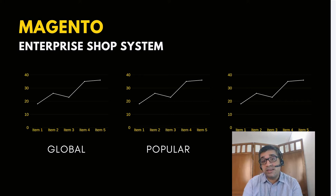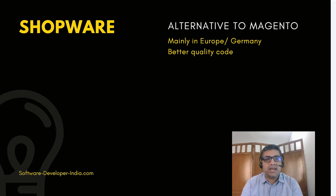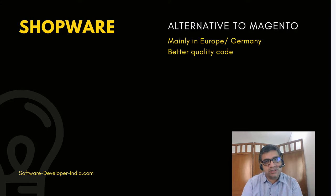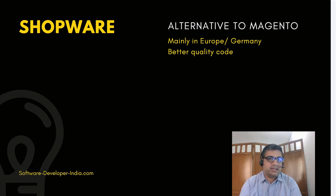Shopware is used mainly in Europe — particularly in Germany and other German-speaking countries — as an alternative to Magento. For a small to medium-sized company with a small to medium-sized budget, you could choose between Magento and Shopware. Shopware has the advantage of being made for the European market, catering to the specific UI/UX preferences of countries like Germany, Switzerland, and Austria.